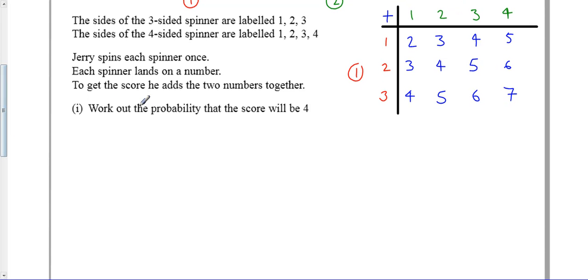Let's look at what we've got to do for the question. It says work out the probability that the score will be 4.